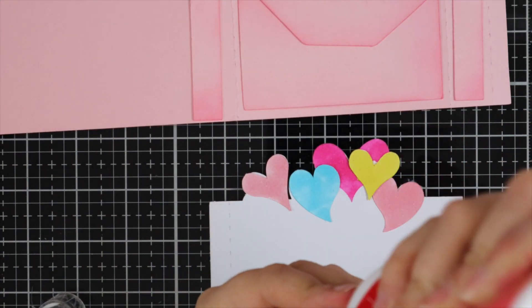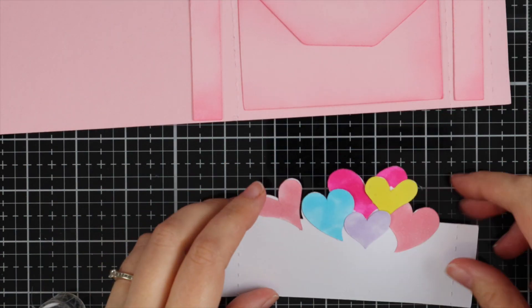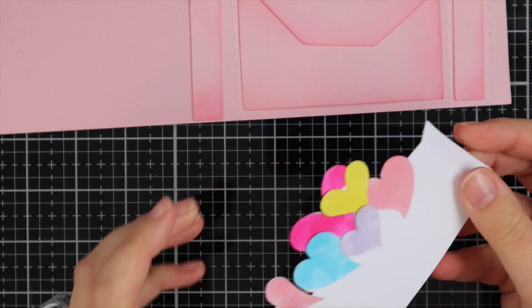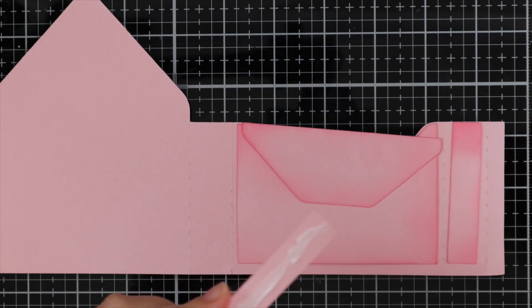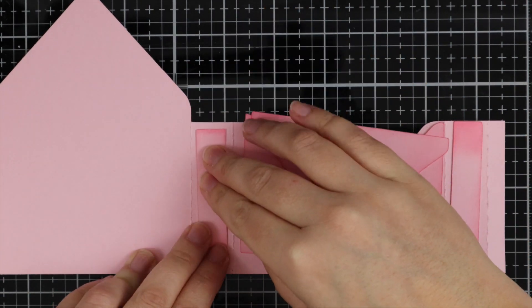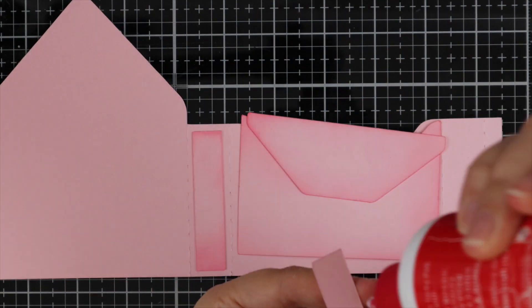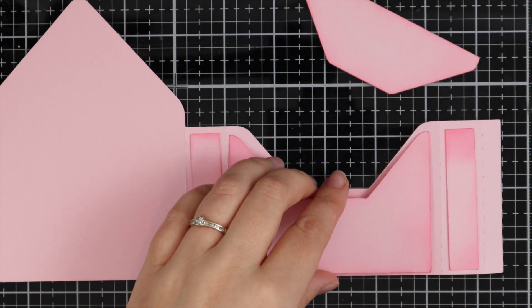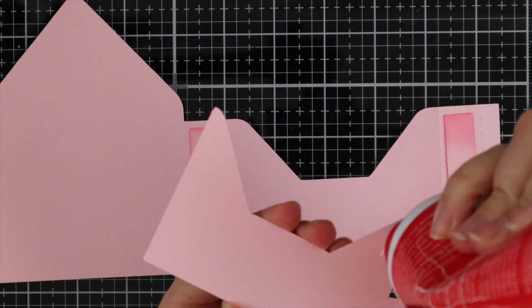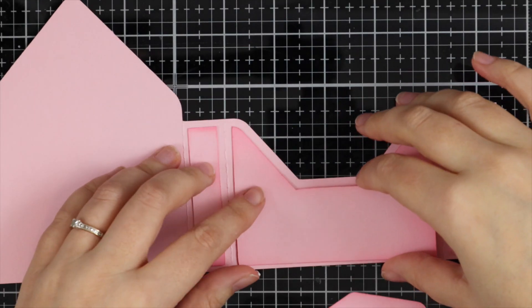So once all my hearts have been adhered onto that piece, I'm just going to fold the edges. And then I'm going to move on to the envelope box. I'm doing exactly the same thing, I've just got my PVA glue, and then I'm going to adhere this down. And you'll see here what I mean about using PVA glue, because I had to move a couple of the pieces because they were a little bit wonky.